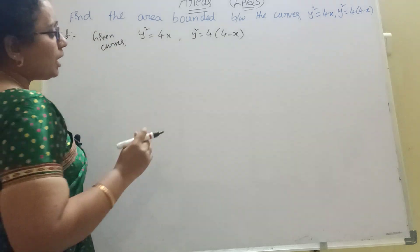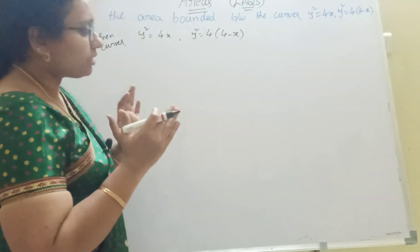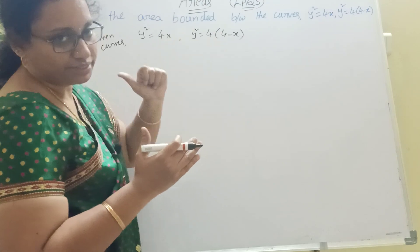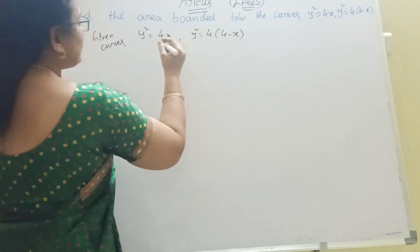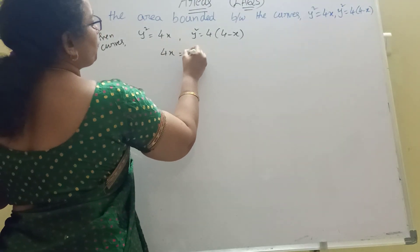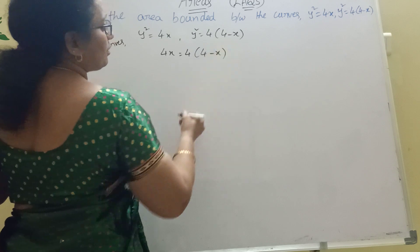Both curves are equal, so we equate the right-hand sides. Therefore: 4x equal to 4 into (4 minus x).